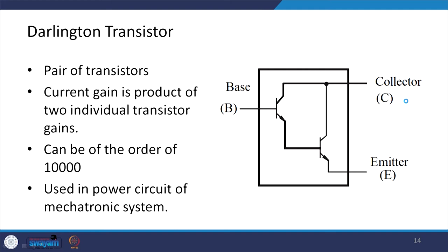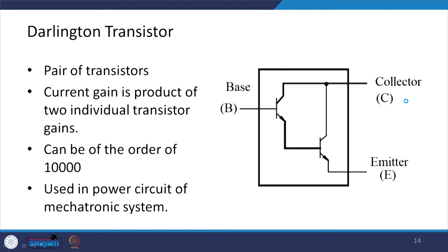There is a type called Darlington transistors, which are often used in mechatronic circuits. These are a pair of transistors where the emitter of the first transistor is connected to the base of the second, and their collectors are connected together. The current gain is the product of the two individual transistor gains, which can be of the order of 10,000. These are used in power circuits of mechatronic systems.